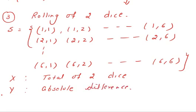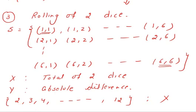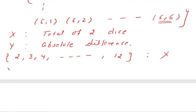Capital X, the total of two dice, can take values from a minimum of 2 (when both dice show 1) up to a maximum of 12 (when both show 6). Capital Y, the absolute difference, can take value 0 (when both dice match), up to a maximum of 5 (e.g., outcomes 1-6 or 6-1).